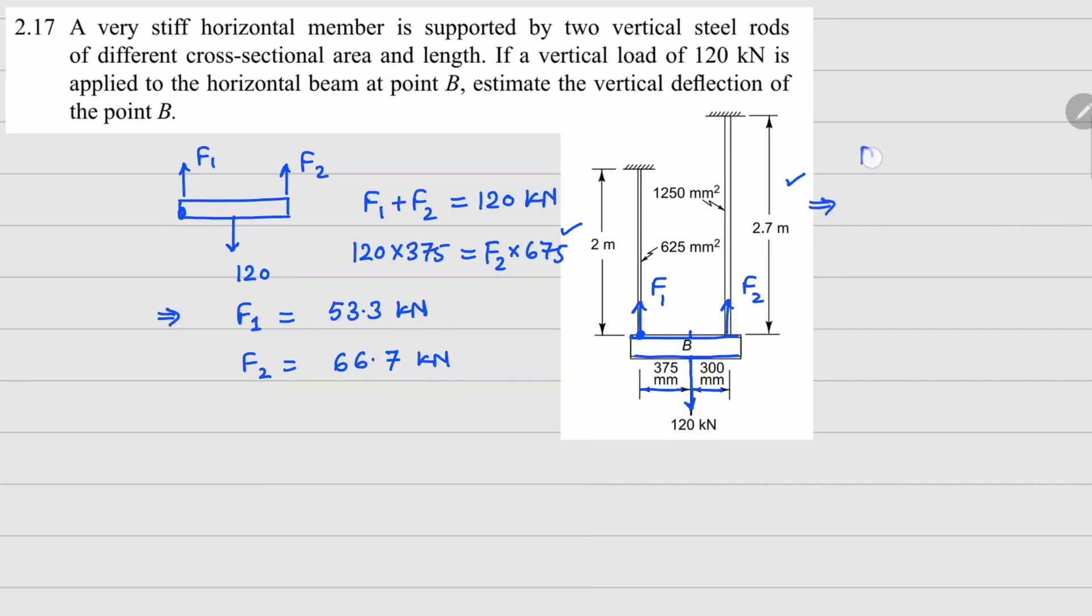Now once you have these forces we can go and calculate the deformation using Hooke's law. So your delta one is going to be F1 L1 divided by E1 A1. This is for this member right here. So your delta one with the force value of 53.3 kilonewtons, length here is 2 meters, elastic modulus 205 for steel, and your cross section area here is 625 millimeter square.